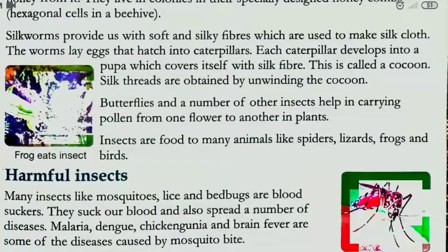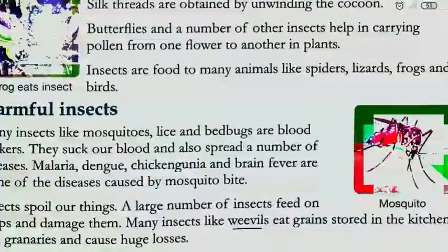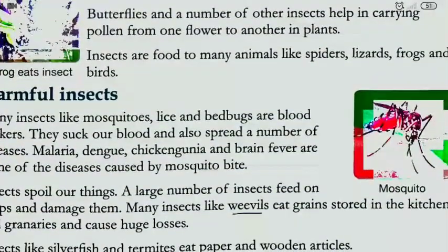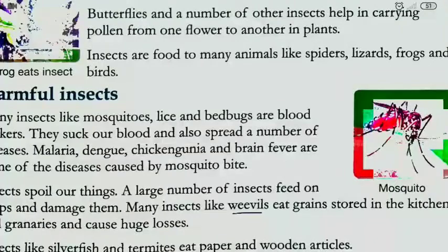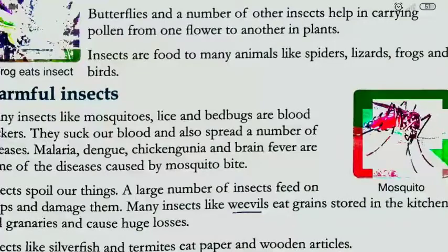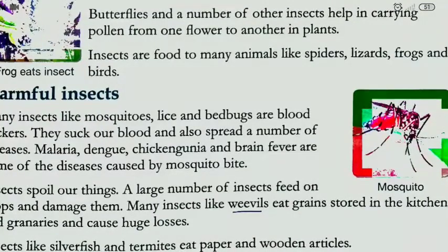Now, harmful insects. Many insects like mosquitoes, flies and bed bugs are blood suckers. Yaani ki bohot saare machchar, bed bugs jaise aapke machchar, joon, khatmal jo insects hote hai — ye sab blood suckers hote hai. Yeh aapka blood suck karte hai.